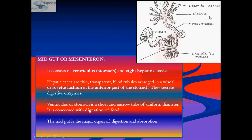The midgut is also known as the mesenteron. It forms a true gut consisting entirely of a stomach or ventriculus. At the junction of the gizzard and stomach are six pairs of gastric caeca, which are pouch-like structures arranged in a ring-like manner around the anterior end of the stomach.